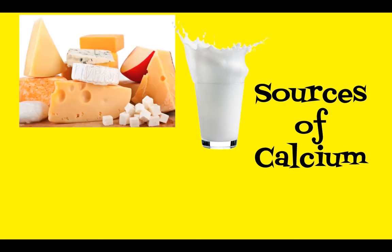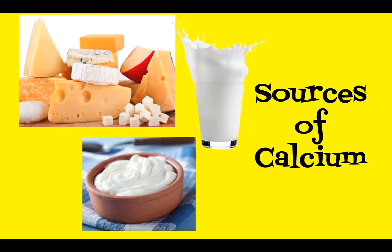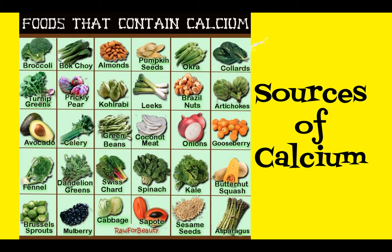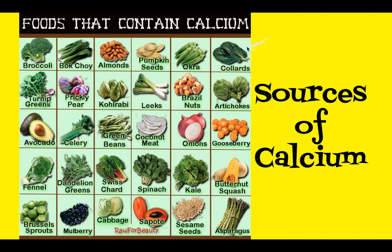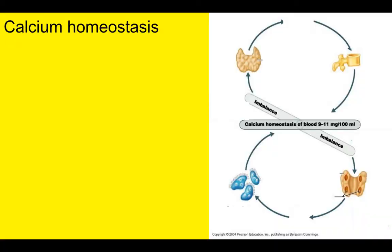When you think about calcium, the first thing most people think of are dairy products. But some people don't eat dairy, so what else can they do? There are lots of places you can get it — all kinds of green vegetables, onions, coconuts, spinach, butternut squash, asparagus, and some seeds. Lots of places to get calcium if you're not a dairy person.